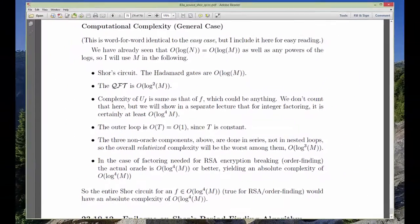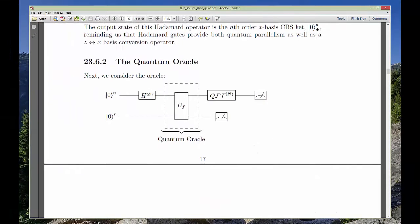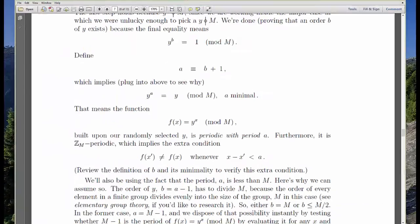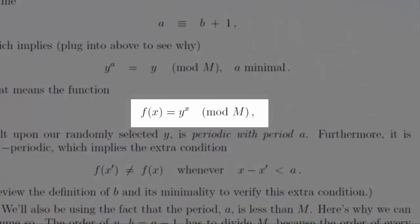Now, it's only relativized speedup because we don't know anything about the oracle's complexity. But for the large class of periodic functions needed for, say, RSA encryption, i.e., factoring, we do know about those oracles.